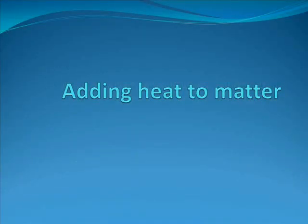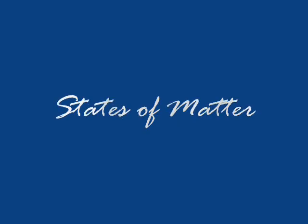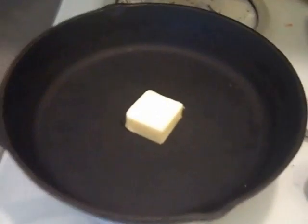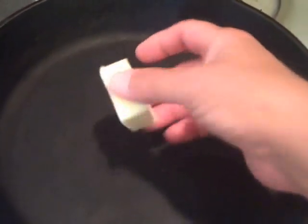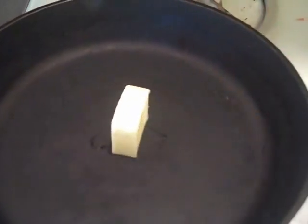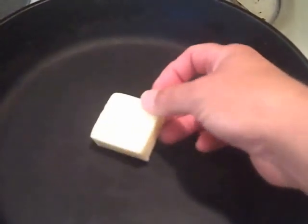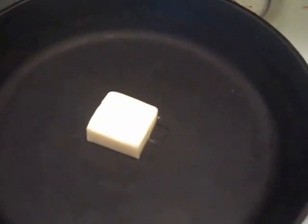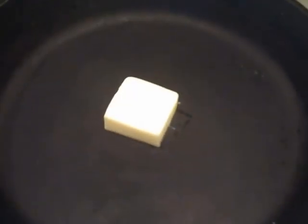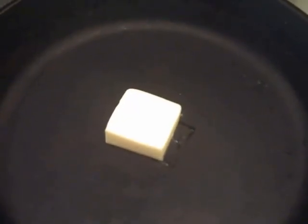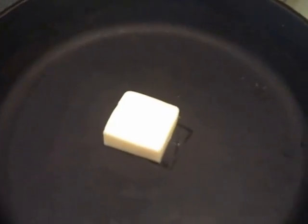Let's look at a video that shows how heat can affect the state of matter of a substance. We start with some butter in a cold pan. Right now this butter is in the solid state. Notice that I can pick it up, turn it around, and move it — and it maintains its solid shape. As the butter gains heat energy from the pan, the molecules in the butter start to move faster and spread apart. The butter is melting.